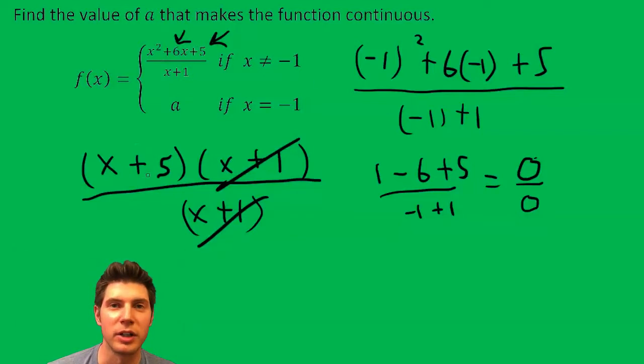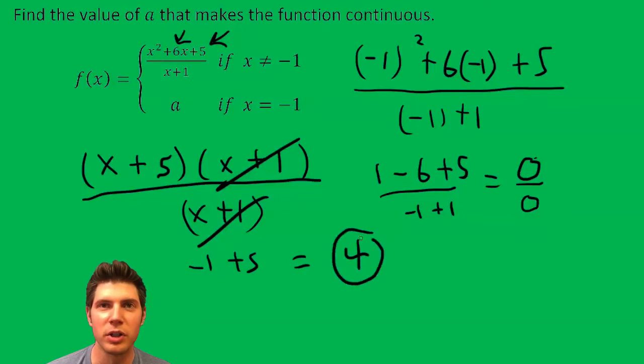So now when we plug negative one in, we get negative one plus five, which gives us four. So really when we plug negative one into here, we don't get four because it's undefined with the zero over zero.